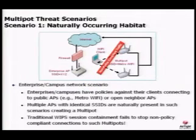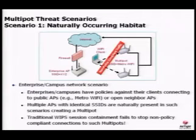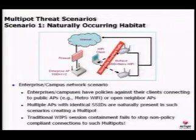Having seen the reason for Multipot behavior, let us look at two major threat scenarios. Scenario one is what is known as the naturally occurring habitat, which can potentially occur in enterprise or academic institutions. This refers to the presence of multiple APs with identical SSIDs around the enterprise or academic institution. Most organizations have policies against their authorized Wi-Fi clients communicating with external APs, but in the presence of Multipot, such policies may not be enforced by present-day WIPS, resulting in non-policy-compliant communication.